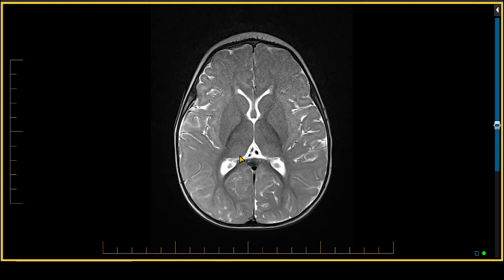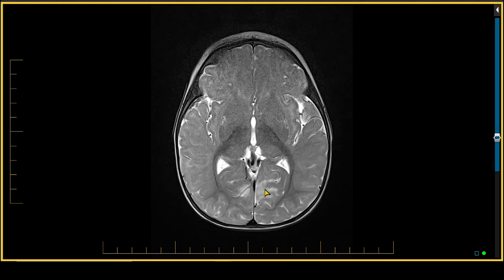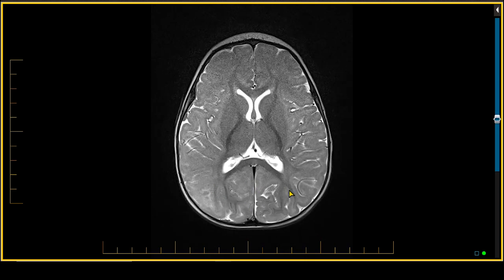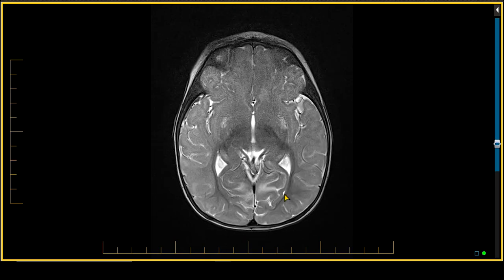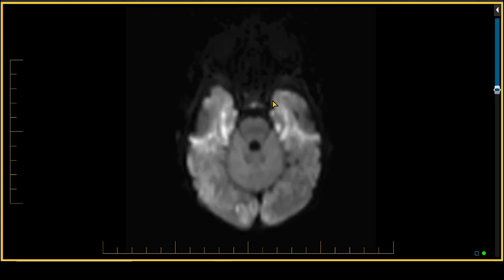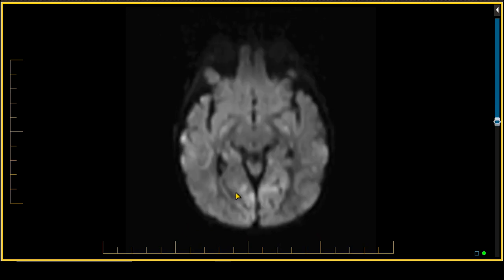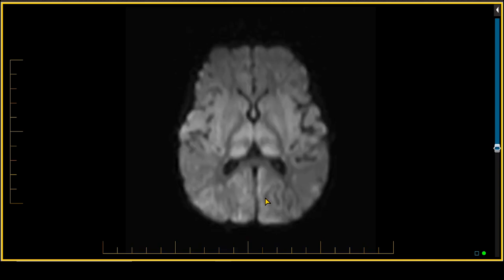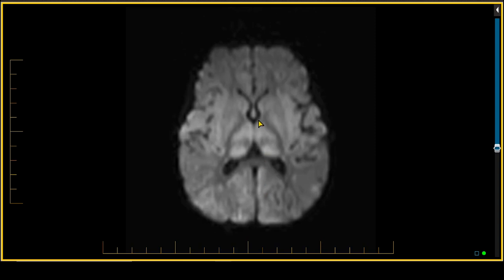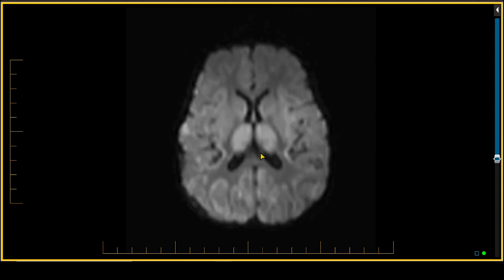Once again, we can see, as in the previous case, high signal intensity on T2-weighted scanning, which is extending into the occipital region and parietal region bilaterally and fairly symmetrically. The diffusion-weighted scan is even more striking, showing cortical high signal intensity in the medial aspect of the occipital lobes as well as extending to the temporal lobes. You also see bright signal intensity bilaterally in the thalami.